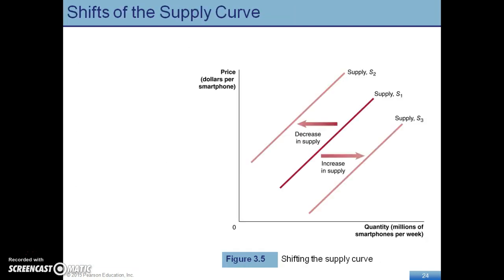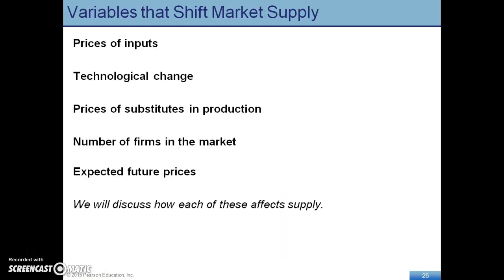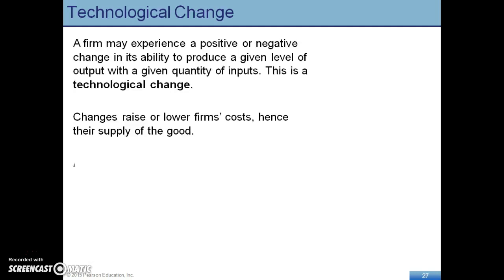A shift of the supply curve will be illustrated here — anything going to the right is an increase and to the left is a decrease. Here are the factors why the supply curve will shift: price of inputs, which is a major one; technological change; price of substitutes in production, like labor; number of firms in the market; and expected future prices. All of those factors will cause the supply curve to increase or decrease, causing a shift in the supply curve.